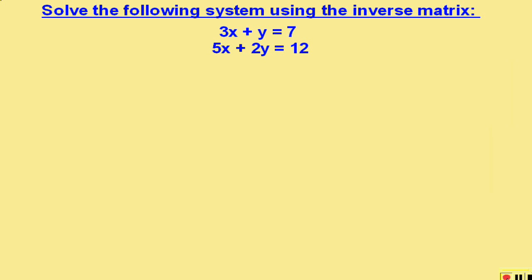Solving a system using inverse matrices. Solve the following: 3x plus y equals 7, and 5x plus 2y equals 12.